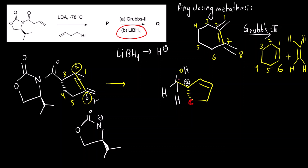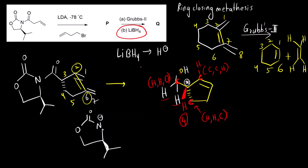Assign priorities to the groups attached to the chiral center. One group is above the plane (hydrogen), and below the plane is the ring. Of the three carbon-bearing substituents: CH2OH has oxygen attached — highest atomic number, so priority 1. The carbon with the double bond (two carbons attached) is priority 2. The carbon with two hydrogens and one carbon is priority 3. Hydrogen is priority 4. Going 1→2→3 is clockwise, which should be R, but since the fourth priority group is on the wedge bond, the configuration is actually S.